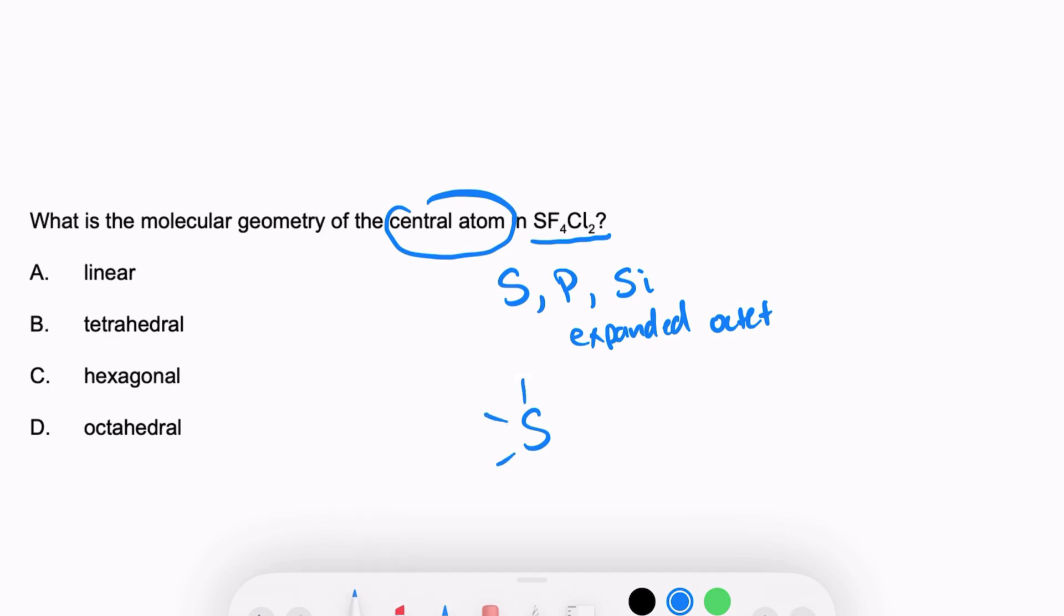Because sulfur can form the expanded octet, all six of those atoms, four fluorines and two chlorines, they're all going to go around the sulfur. And that shape is special, it's called octahedral. There's six bonds around the sulfur, so you do need to know that. Hexagonal would be one that maybe some people would guess because there's six atoms and hexa is the prefix that means six, but that's really just to trick you.